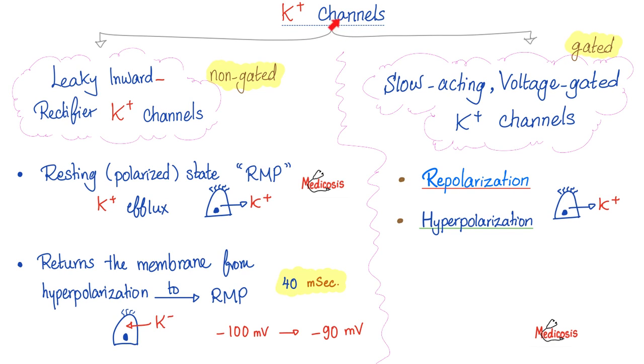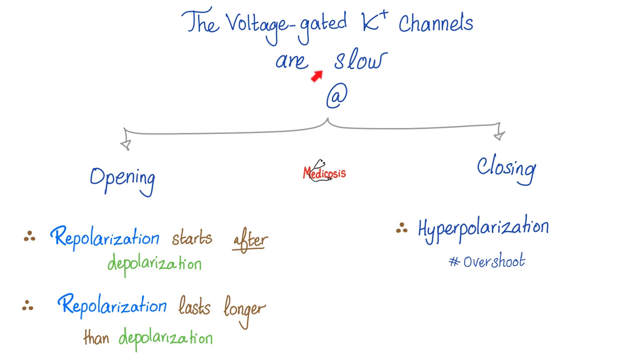Potassium channels come in many types. I'll give you just two. The leaky, inward rectifying potassium channels, they are always open. They have no gate. And the slow-acting, voltage-gated potassium channels, they are gated slow-acting. Slow compared to what? To the sodium ones. Because the voltage-gated potassium channels are slow at opening and slow at closing. Slow at opening, and that's why repolarization starts after depolarization. And that's why repolarization lasts longer than depolarization. They are also slow at closing, and that's why you have hyperpolarization. That's why you overshoot.